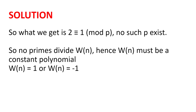So no primes divide w(n). Hence, w(n) must be a constant polynomial. And this constant polynomial also can't have any primes dividing it. So w(n) = 1 or w(n) = -1.